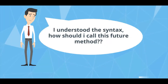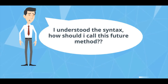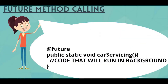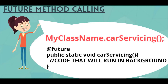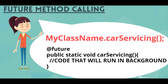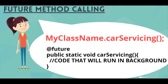How do I call a future method? Very simple — you call a future method like any other method. Just the @future annotation will be there; the rest is the same. Here, this is a future method with static void car servicing. If you want to call that method, you call it with the class name dot car servicing — as easy as that. This is how you call any static method.